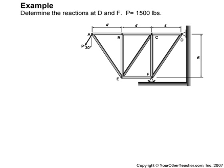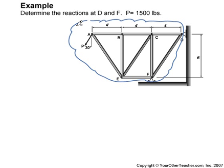Determine reactions at D and F, where P is 1500 pounds. So our free body diagram is going to cut through as little as possible. We'll sneak under here at F and then cut through the pin at D.